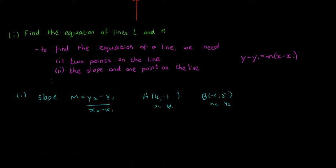Then I'll go green. So we're going to say M is equal to Y2, which is 5, minus Y1. That's going to be minus minus 1, so be careful of that. Then X2, which is minus 2, and minus 4, which is X1. So that's going to be 6 over minus 6. So minus minus 1 will be plus 1, and then 5 plus 1 is 6. Minus 2 minus 4 is minus 6. Our slope is going to be minus 1.